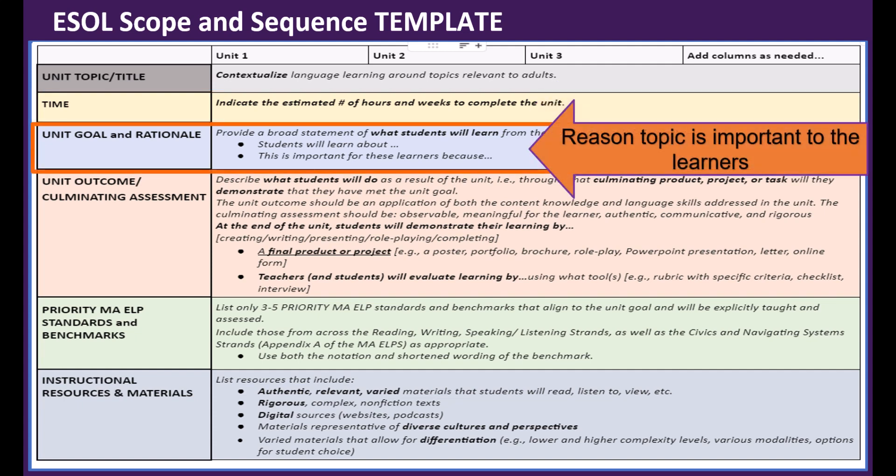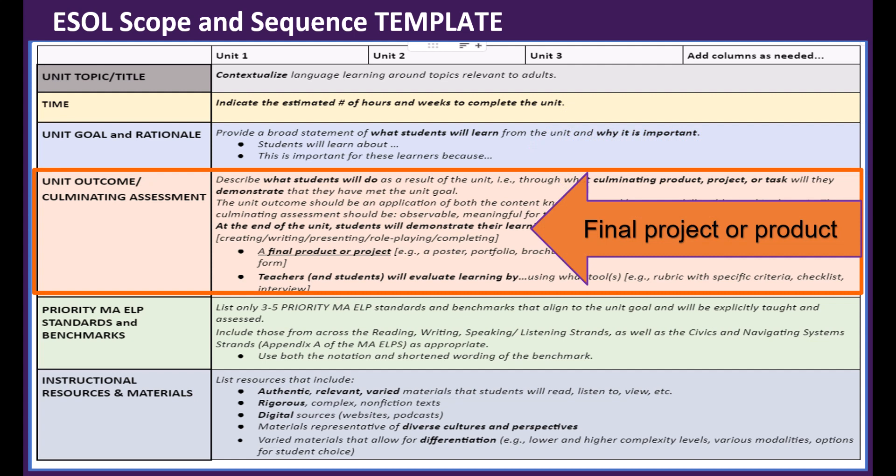The unit goal and rationale is a broad statement of what students will learn from the unit and why the unit is important. Unit outcomes and culminating assessment describe what students will do to demonstrate their learning.